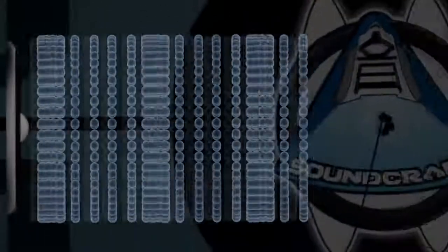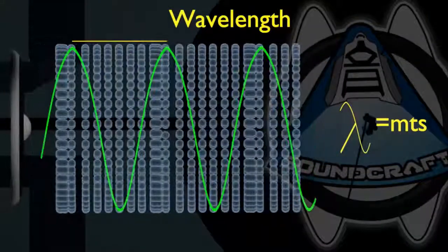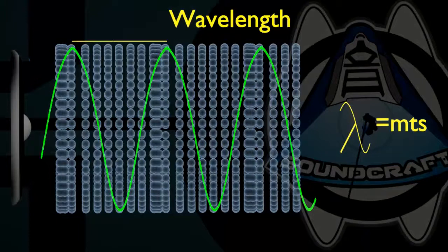Fifth, the distance between two peaks of compressed regions of air is known as wavelength, and it is measured in meters.